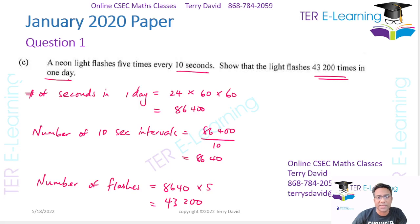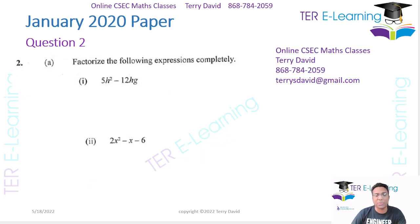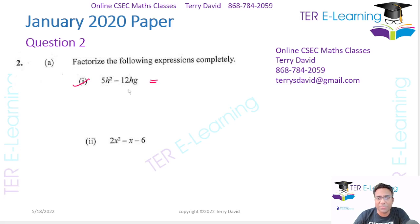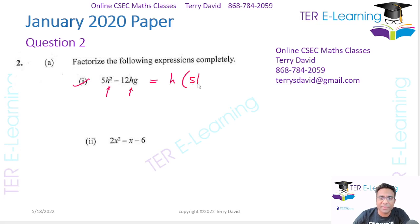Let's do question 2. We want to factorize 5H squared minus 12HG. The method we're using is the HCF method. No numbers are common between 5 and 12, but H is common. The HCF of H squared and H is H. So factorizing gives us H open bracket 5H minus 12G close bracket.